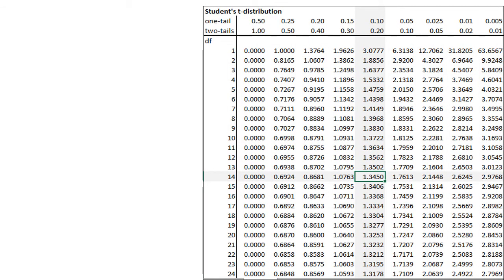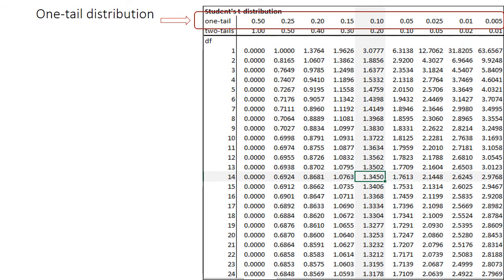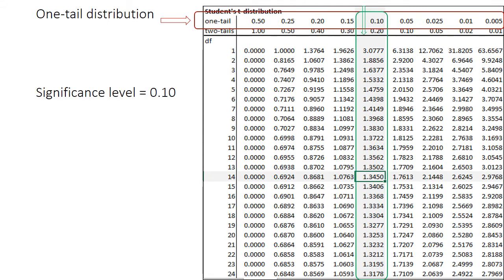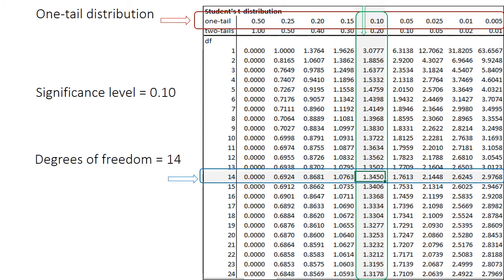In the first step, select the row for one tail, then select the column for the significance level equals 0.10, and then select the row for the degrees of freedom equals 14. The t-critical value is minus 1.345.